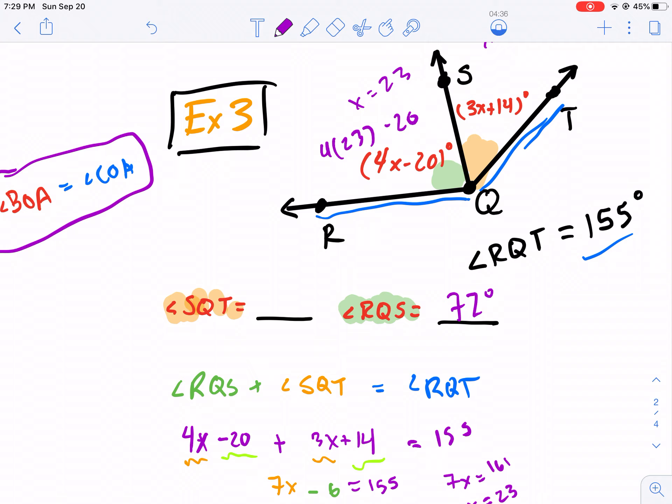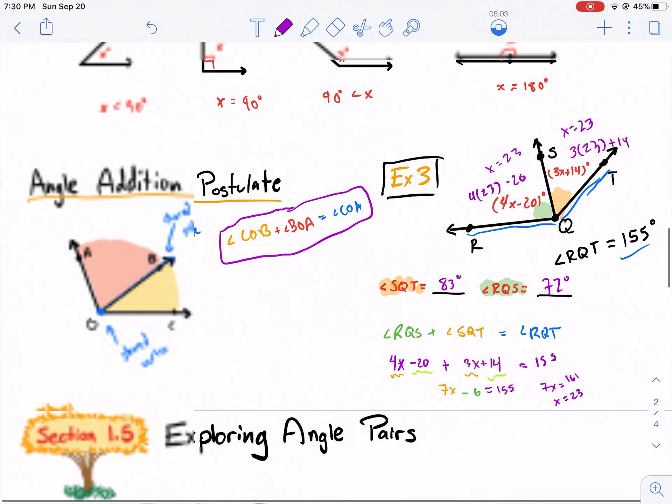Then I have 3 times 23 plus 14. 3 times 23, that's going to give me 69. 69 plus 14. So that gives me 83. Do 83 plus 72 equal 155? They sure do. So there's our final answer.